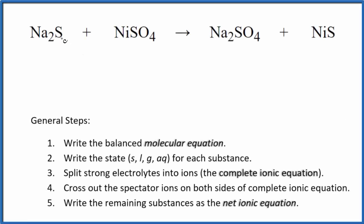Let's write the balanced net ionic equation for Na2S plus NiSO4. This is sodium sulfide and here we have nickel sulfate. So the first thing we need to do with net ionic equations is balance the molecular equation. In this case it's already balanced.